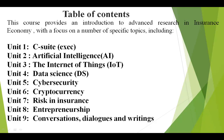The first element is about your table of contents. This course provides an introduction to advanced research in insurance economy with a focused number of specific topics, including Unit 1: C-suite, Unit 2: Artificial Intelligence, Unit 3: the Internet of Things (IoT), Unit 4: Data Science, Unit 5: Cybersecurity, Unit 6: Cryptocurrency, Unit 7: Risk in Insurance, Unit 8: Entrepreneurship Skills.